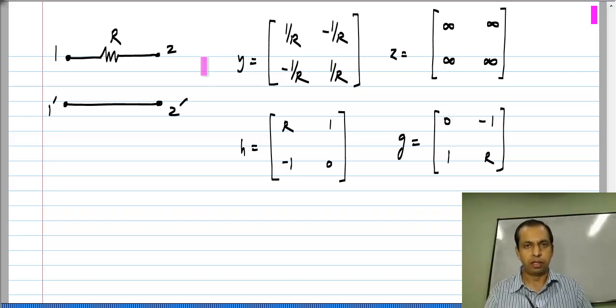Otherwise, if you apply a current here with the other port open-circuited, you will only get infinite voltages because there is no path for the current to flow. For this particular circuit, we have Y, H, and G parameters which are well-defined, but Z parameters cannot be defined.